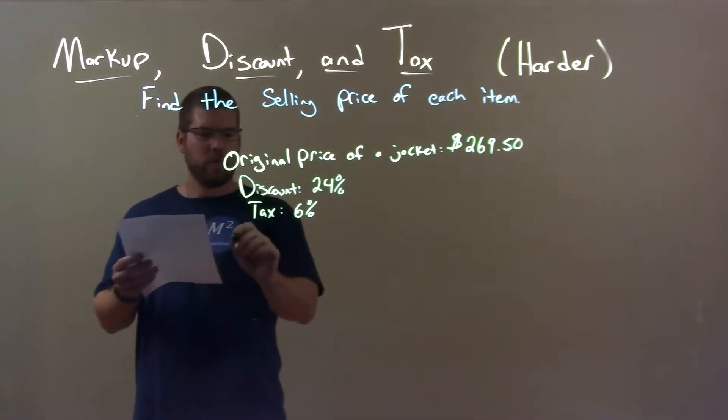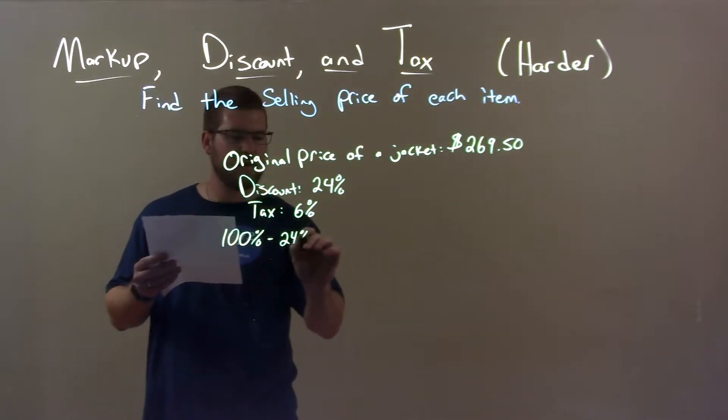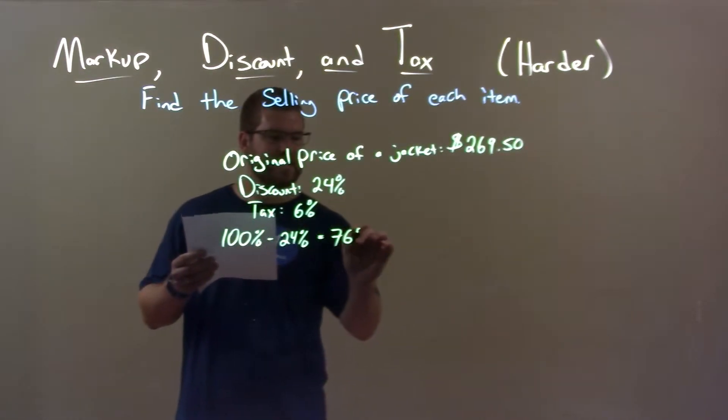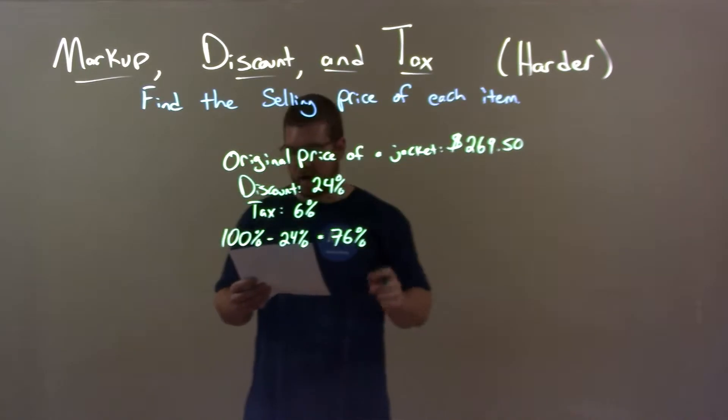Well, the discount of 24%—100% minus 24%, we take that discount, we subtract it from 100 and we get 76%. That means we're going to pay 76% of the original price of the jacket.